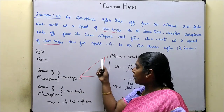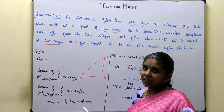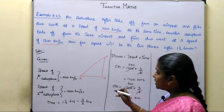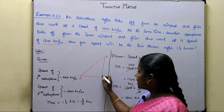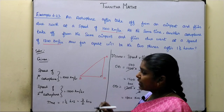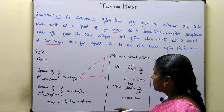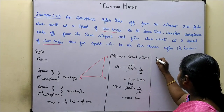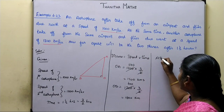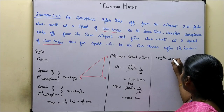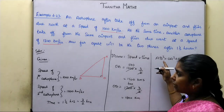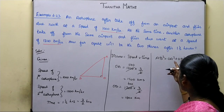Now we have to find AB. Since it is a right angle triangle, we can apply the Pythagorean theorem. AB square is equal to OA square plus OB square.